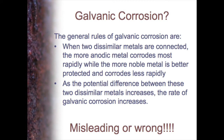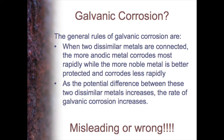They know that there are problems, but it's not simply a matter of joining metals. You might find something like this in course notes or in more basic textbooks — general rules of galvanic corrosion: when two dissimilar metals are connected, the more anodic metal corrodes most rapidly, the more noble metal is better protected and corrodes less rapidly. And then the second point: the greater the potential difference between these dissimilar metals, the greater the rate of galvanic corrosion. That is misleading at best; that is wrong at worst.